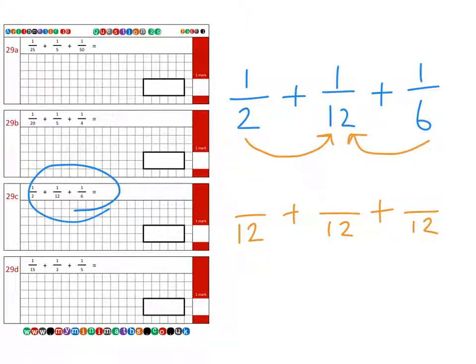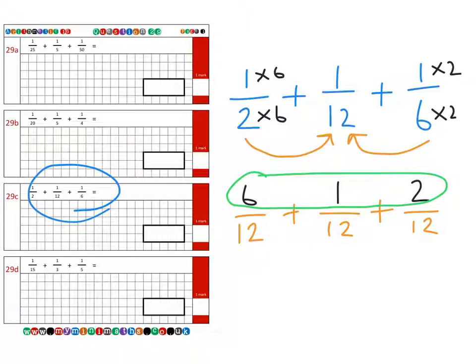So if we take the 1 at the top, the 2 we've multiplied by 6, so we do the same with the top. So our new numerator becomes 6. Then the 12 remains the same, so that stays the same as 1 as our numerator. And then finally, we've multiplied this 6 by 2 to get to 12, so we do the same with the top to give us a numerator of 2. And again, we add these together, these numerators, to give us a grand total of 9 over 12, or 3 quarters.